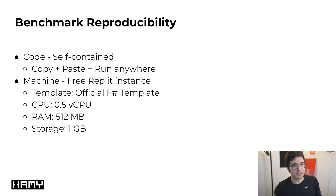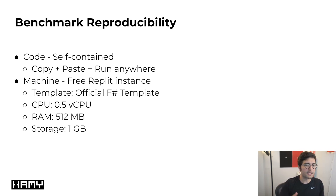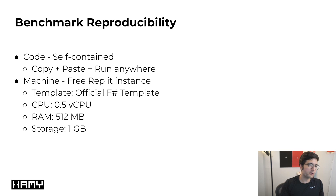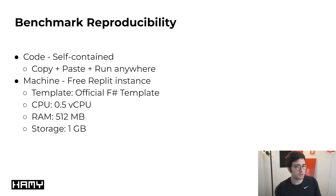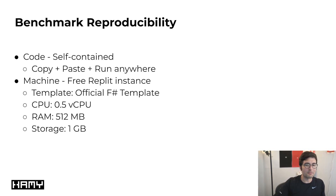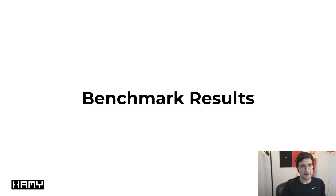Now let's talk about what I mean by reproducibility. I basically had two categories. One is the code itself — can we reproduce what the code is supposed to do? For this, I really wanted the benchmark to be self-contained with basically no external dependencies. You don't have to install NuGet or anything like that. You can just take the code, copy and paste it, and run it anywhere you can run F#, and it should just work. The second category is the machine. I think this is a source of a lot of different results in benchmarks. So I'm just using the free Replit instance using the official F# template: half a vCPU, 512 megabytes of RAM, and one gigabyte of storage. The point is you should be able to take the benchmark code, spin up a free Replit instance in your browser, and get the exact same results.